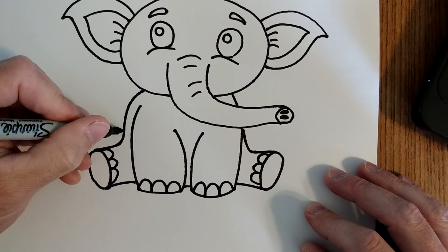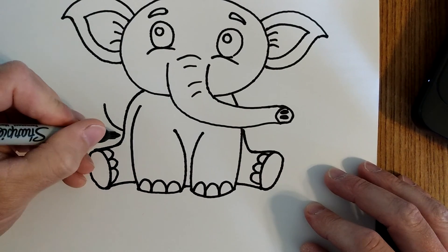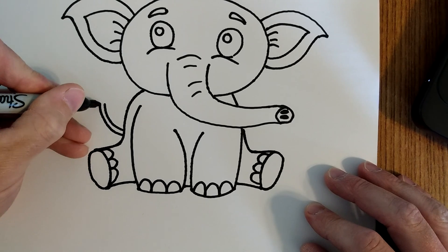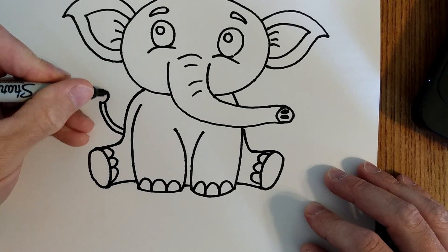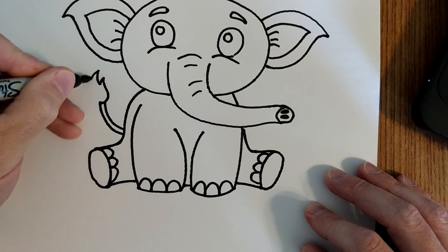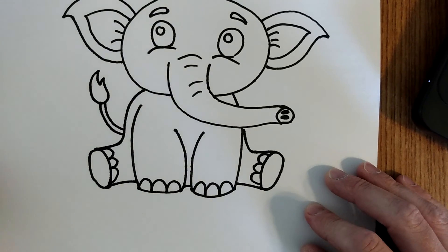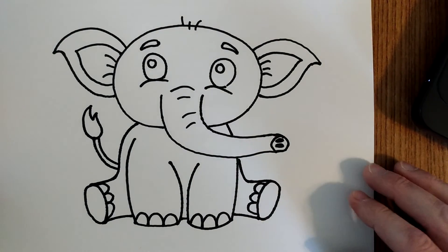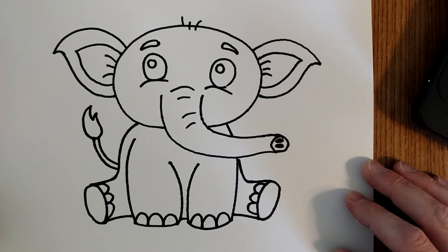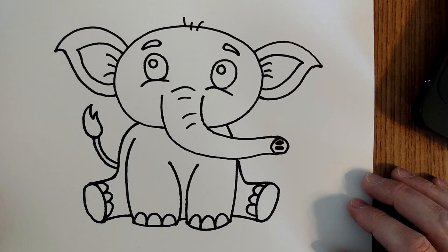And the last thing I need to add is a little tail. So I'm going to do a double line coming out and then up, and at the end of the tail there. There we go, there's our baby elephant. I'll color mine and take a picture.